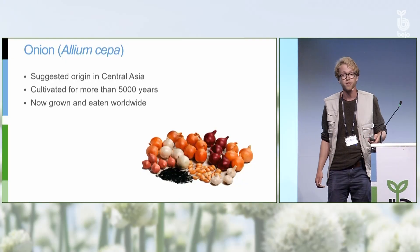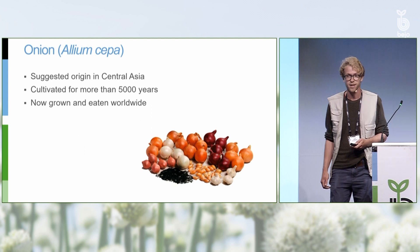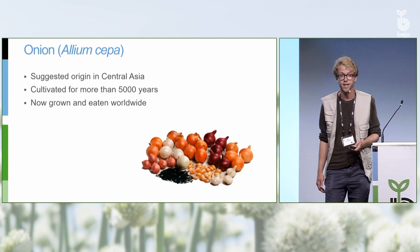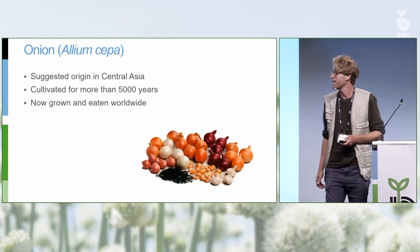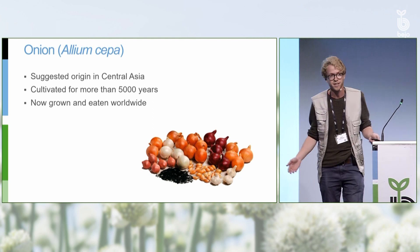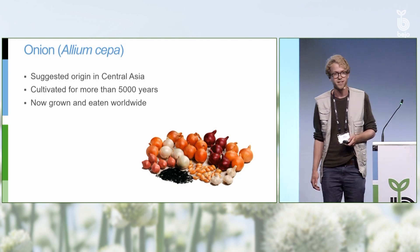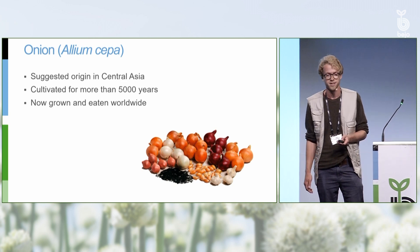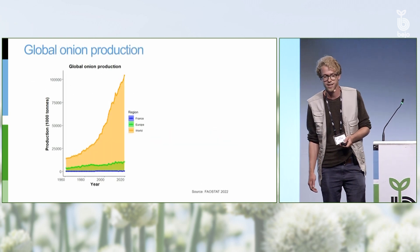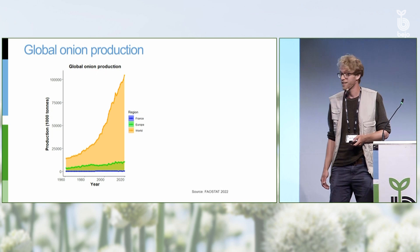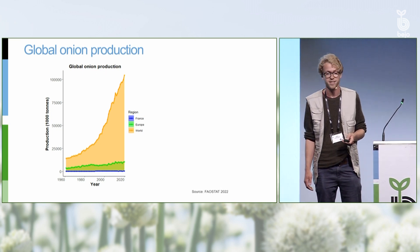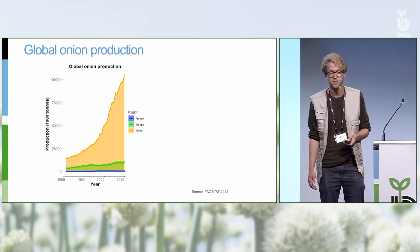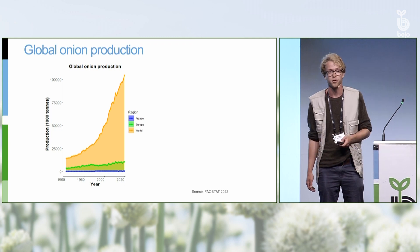Onion has already been grown for a long time — already for 5,000 years. We think it has been domesticated in Central Asia. But today it is grown and cultivated worldwide and it's present in every kitchen. You can see that in the global production, the last decades it rose a lot, so we have a real increase in onion production worldwide.